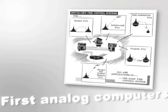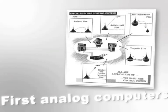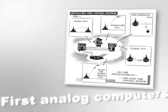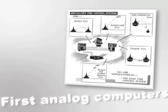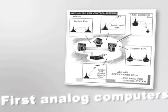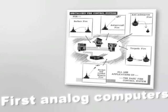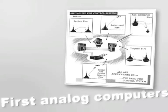Regarding analog computers: during the Second World War, mechanical analog computers were used to control guns. An analog computer would receive the firing ship's location, heading, the wind's direction and speed, and other parameters, as well as operator-entered data concerning the type of projectile, the amount of explosive charge, and most importantly, the location of the target. The analog computer would then control the aiming of the gun.